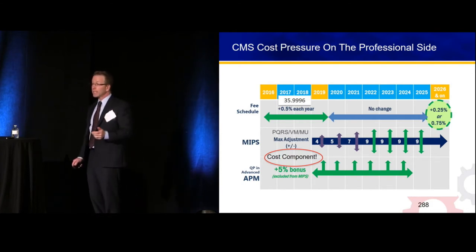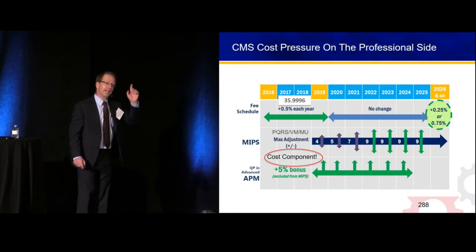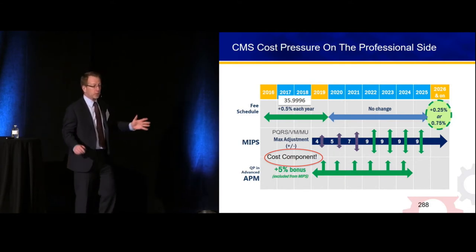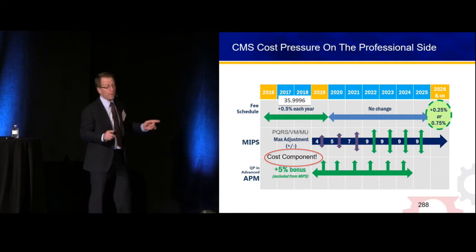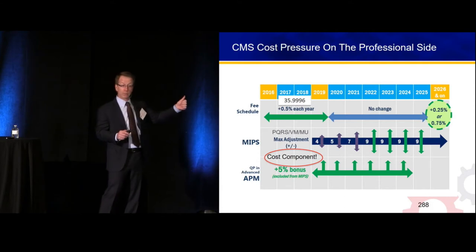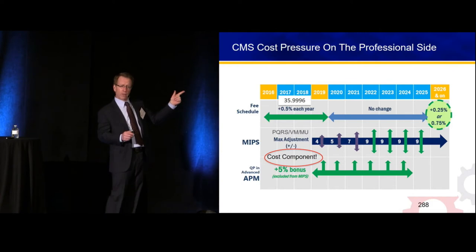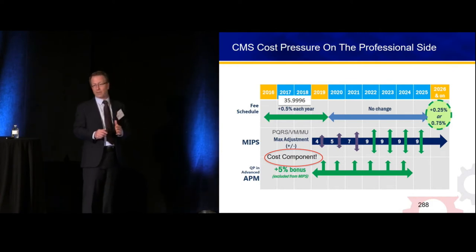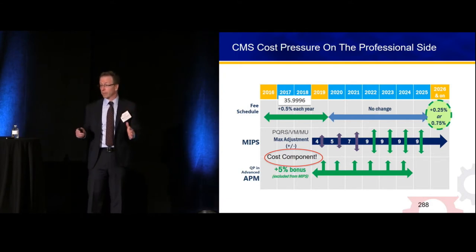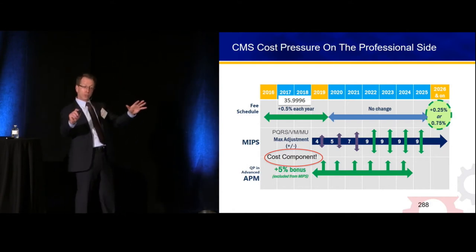Terrific from a budgetary perspective — it's probably not going to go down, probably stable or up a little bit. But in its place, we took a bunch of disparate quality programs and combined them: the PQRS program, the value modifier that was working in the background, meaningful use — all put together into the merit-based incentive payment system, which is a very complicated process.